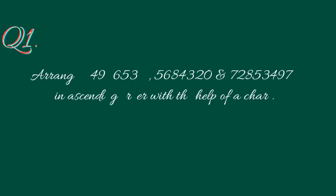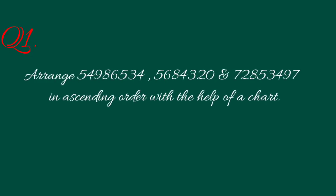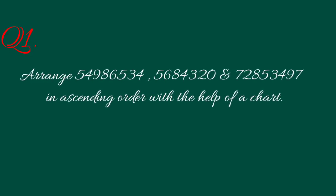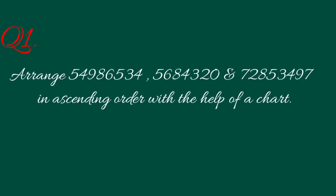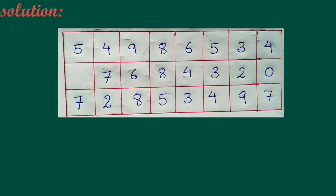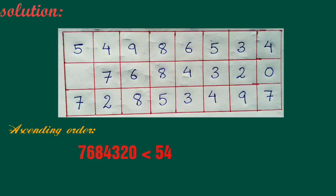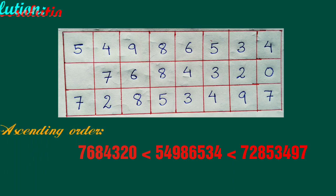In this question, we have to arrange these numbers in ascending order with the help of a chart. Here, two numbers having a place value up to crore are greater than the other numbers, but the number having 7 at the crore place is the greatest.